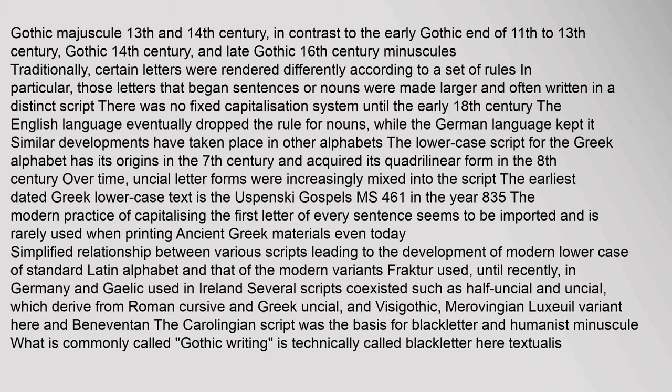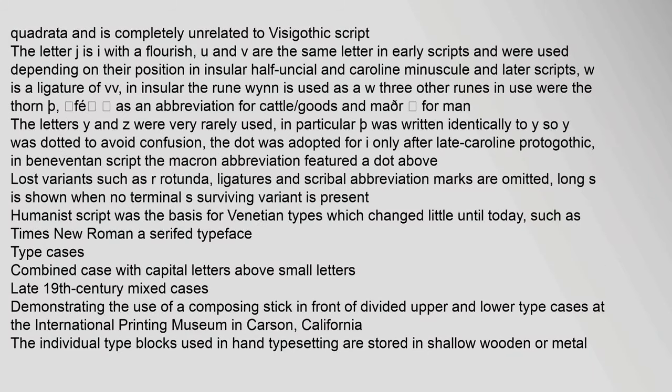The Carolingian script was the basis for blackletter and humanist minuscule. What is commonly called Gothic writing is technically called blackletter (textualis quadrata) and is completely unrelated to Visigothic script. The letter J is I with a flourish; U and V are the same letter in early scripts. W is a ligature of VV. The letters Y and Z were very rarely used — in particular, thorn was written identically to Y, so Y was dotted to avoid confusion. Humanist script was the basis for Venetian types, which changed little until today, such as Times New Roman.